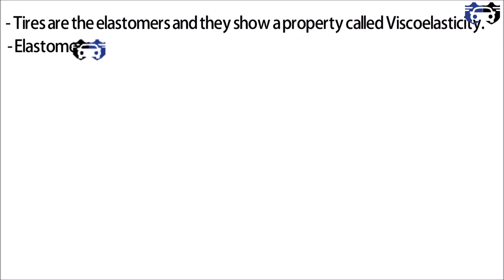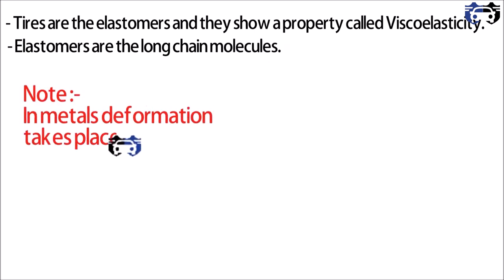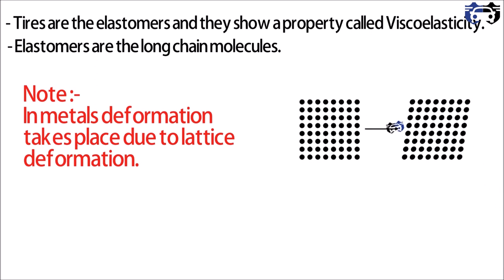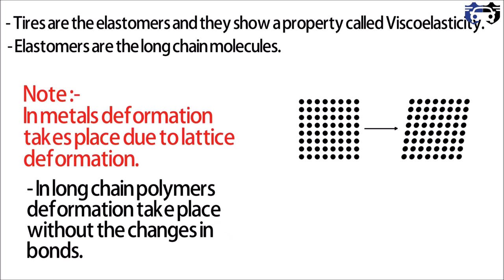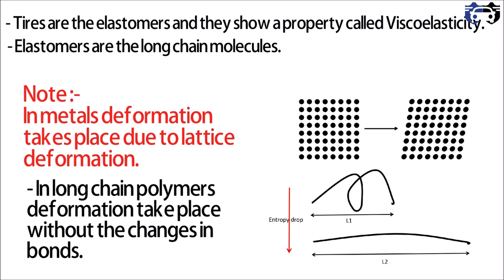Elastomers are long chain molecules. In metals, deformation takes place due to lattice deformation — the bonds are getting displaced and the lattice is changing. But in long chain polymers, deformation takes place without any change in the bonds. As you can see in this figure, we have a long chain polymer of length L1; when we stretch it we get the deformed polymer with length L2, without any change in the bonds.